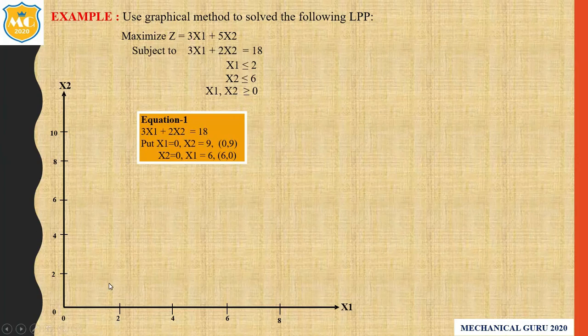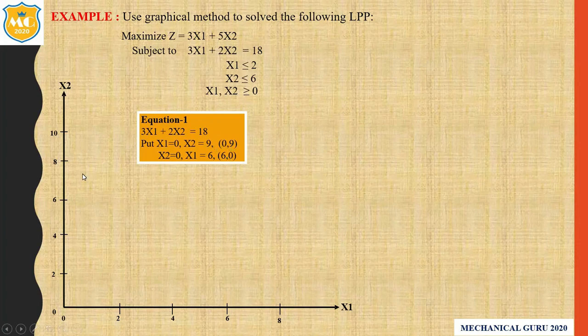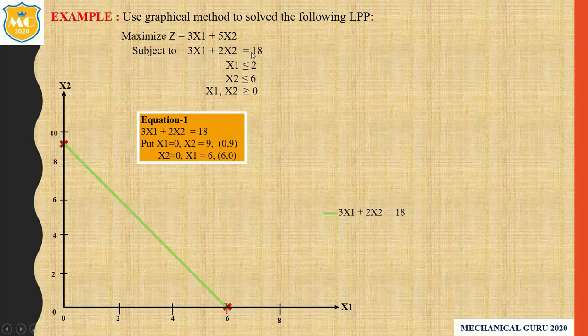Here x1 is represented as the x-axis and x2 as the y-axis. Since x1 and x2 are non-negative, we consider only the first quadrant. We plot the points (0, 9) and (6, 0) and draw a straight line through them. Since the sign is equality, we do not shade towards or away from the origin — we just draw this straight line.